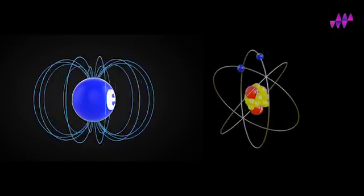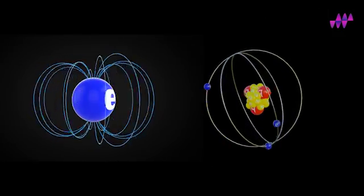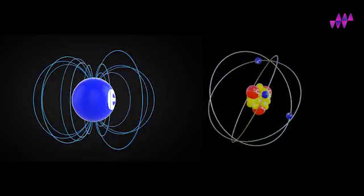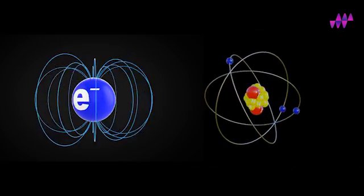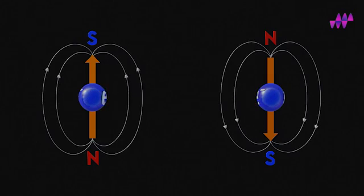Electrons' mobility happens in two forms: around the atom's nucleus and around itself, similar to how Earth orbits around the sun and itself. Furthermore, the electron may spin around itself in two directions—clockwise and counterclockwise.